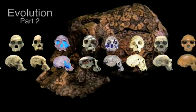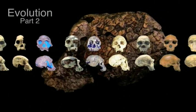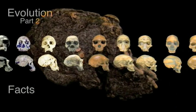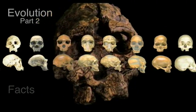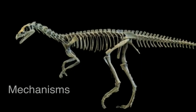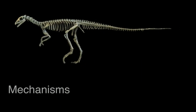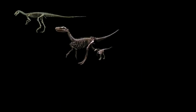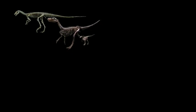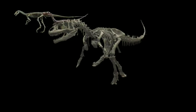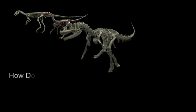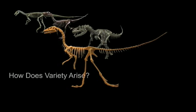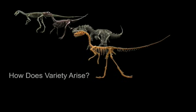In part one of our story of evolution, we demonstrated the facts of evolution. In part two, we will explore the mechanisms. And to do that, we need to ask and answer just two questions. How does variety arise in the genomes of individuals in a group? And, how does that variety give rise to new species?